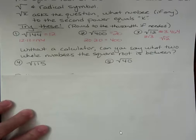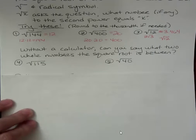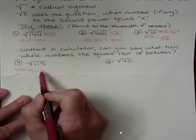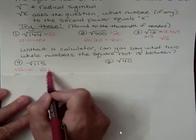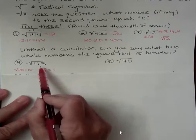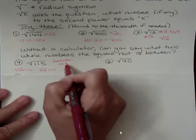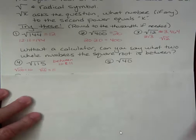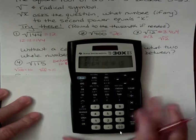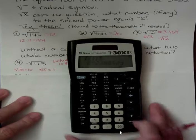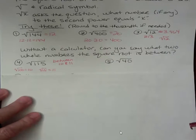Okay. Without a calculator, can you say what two whole numbers the square root is between? The answer to the square root, what two numbers is it between? Well, I know that the square root of 100 is 10. And I know the square root of 121 is 11. So the square root of 115 is somewhere between 10 and 11. I don't know exactly what it is. And I'm not asking you to tell me exactly. We're just asking you to say, can you do it without a calculator? The square root of 115 is 10.72. So sure enough, it was between 11 and 12.